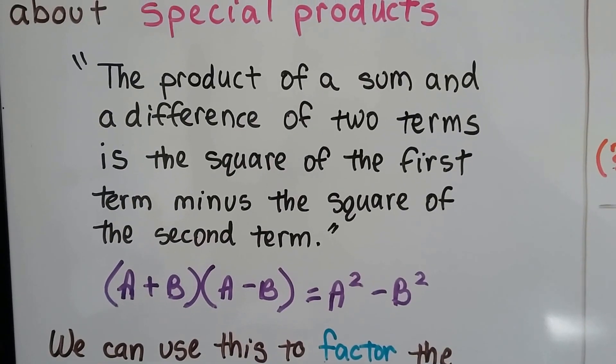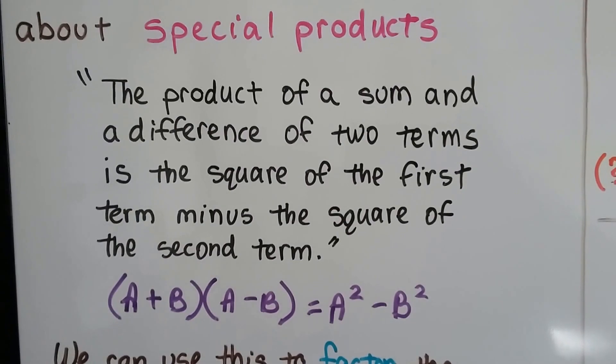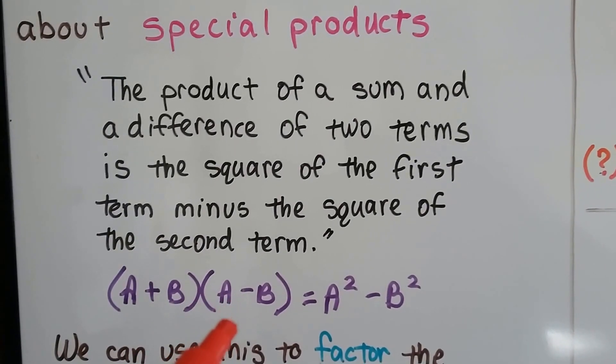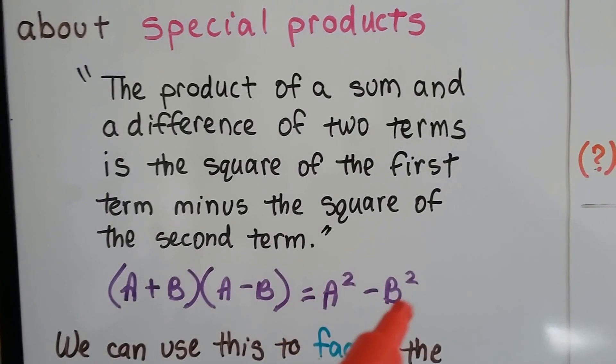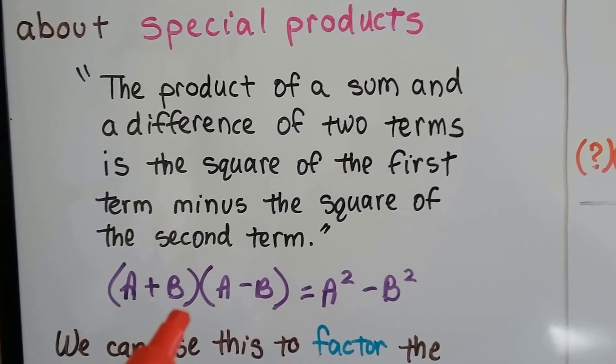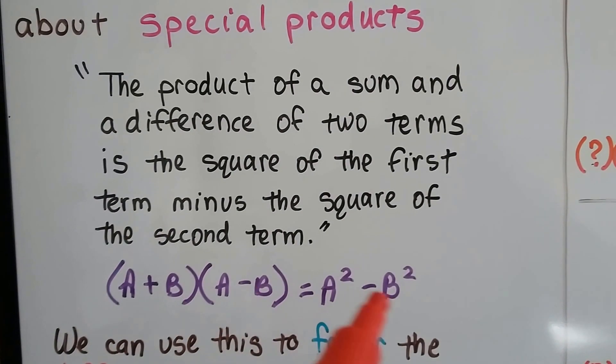If we've got the product of a sum and a difference, (a+b)(a-b), then it's going to give us a² minus b². We could take these two and make an a squared and just subtract b squared.